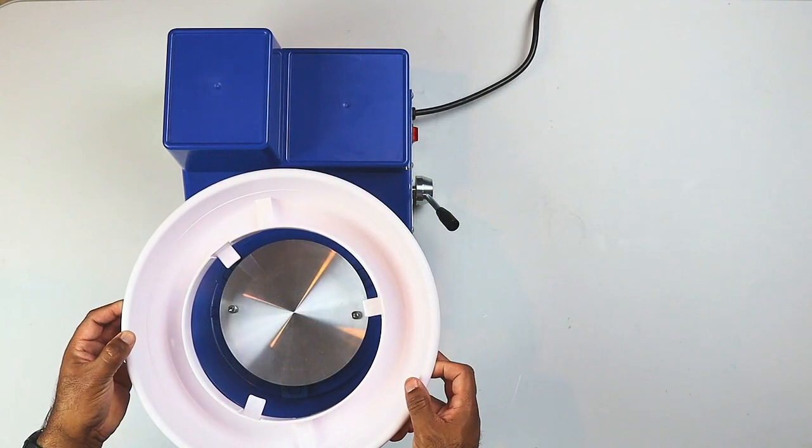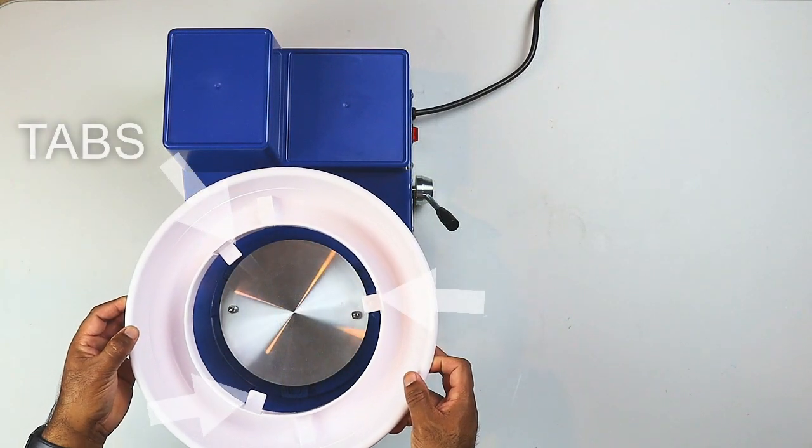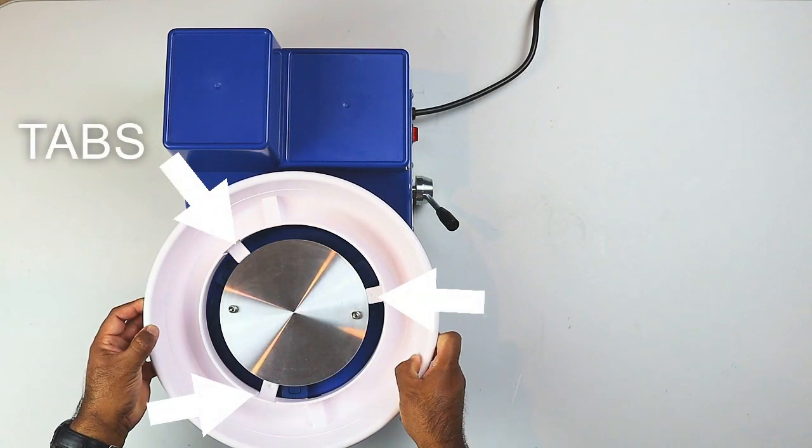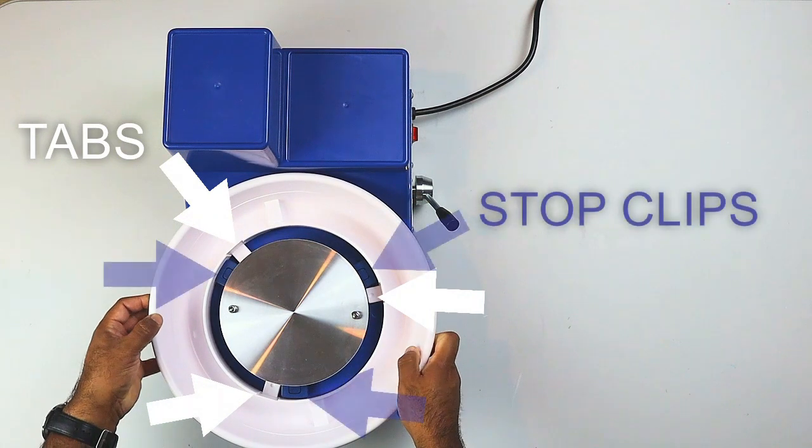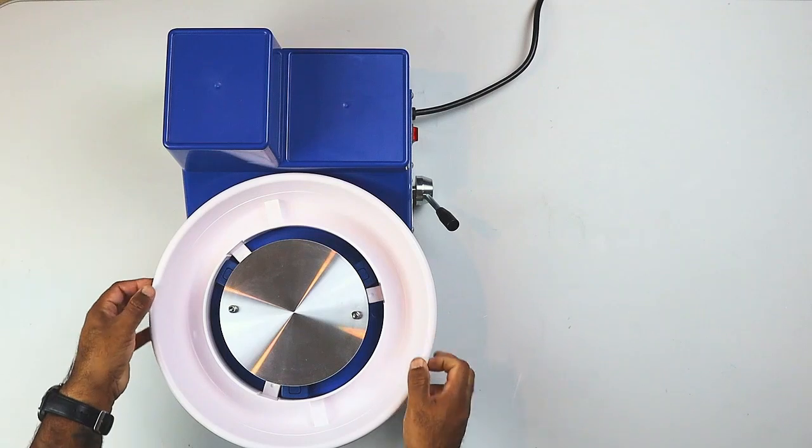To install the pan, orient the tabs on the pan just to the right of the splash pan stop clips on your wheel. Twist the pan counterclockwise to lock the tabs into the stops.